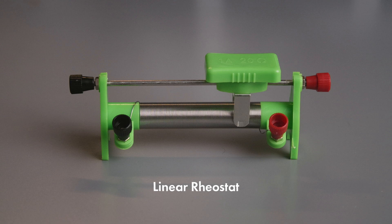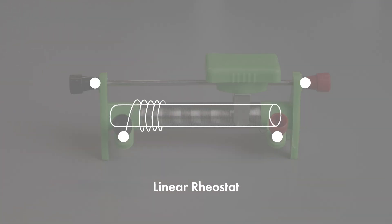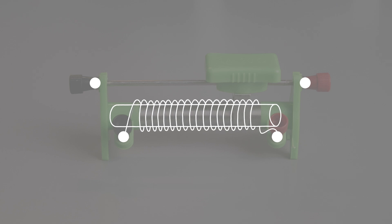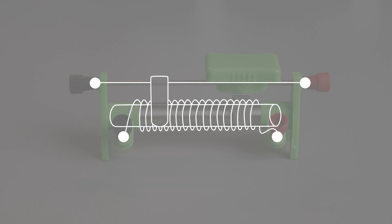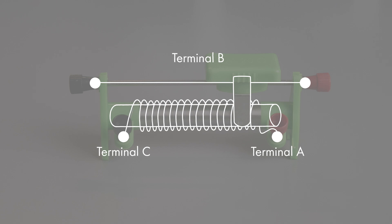This is a linear rheostat. A resistive wire is wound around an insulating ceramic core called a track, and there is a wiper that slides over the windings. You will find three terminals: terminal A, terminal B, and terminal C. Terminal A and terminal C are the two fixed terminals connected to both ends of the resistive element, and terminal B is the variable terminal connected to the sliding wiper or slider.